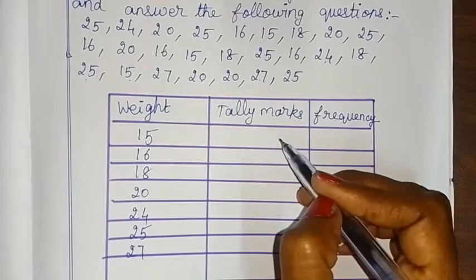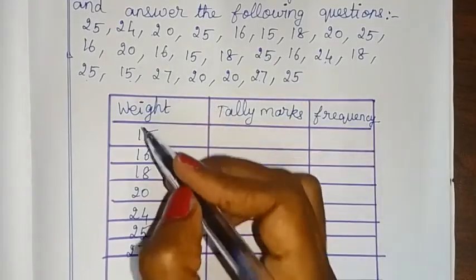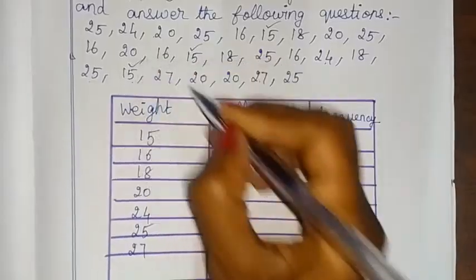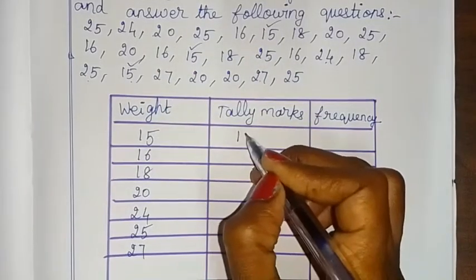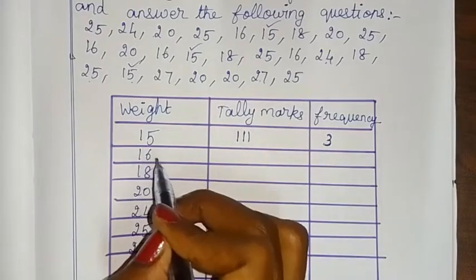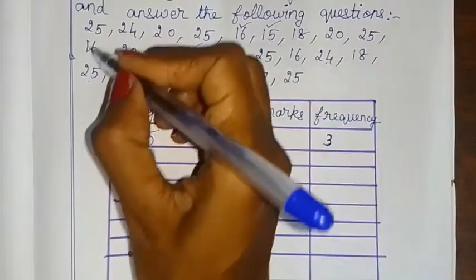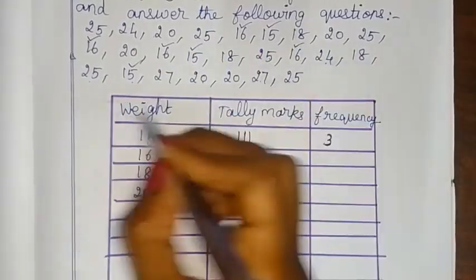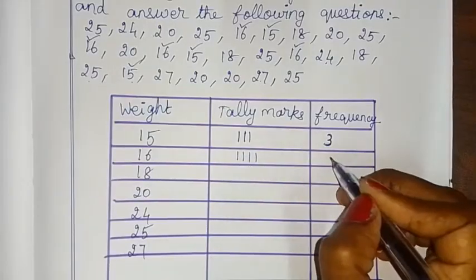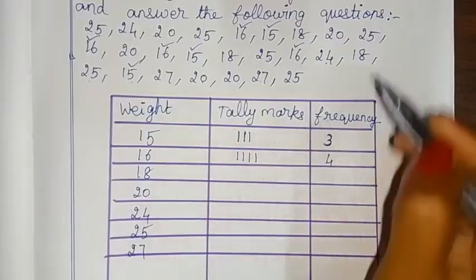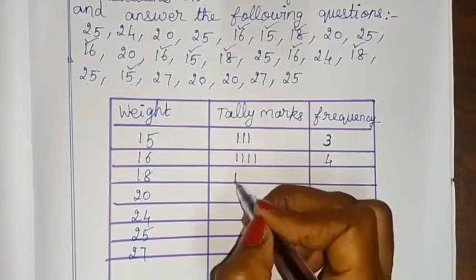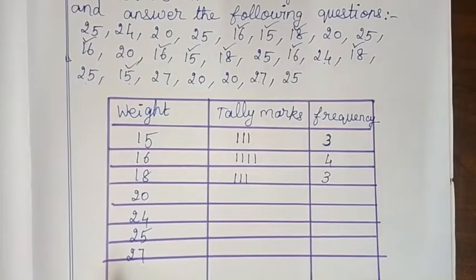Now we note the tally marks and frequency for each weight. For 15 kg: tally marks show 3 vertical lines, so frequency is 3. For 16 kg: checking how many students — tally marks show 1, 2, 3, 4 vertical lines, so frequency is 4. For 18 kg: checking — 2, 3 vertical lines, so frequency is 3.